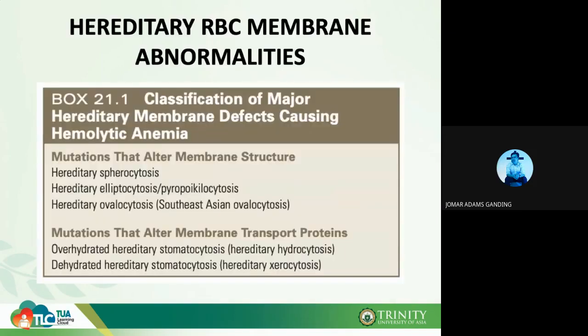Hereditary RBC membrane abnormalities can be of two types: a mutation that leads to alteration of your membrane structure, and a mutation that alters your membrane transport proteins — the proteins responsible for cation exchange moving molecules in and out of your RBC. When it comes to RBC membrane structure, there are transmembrane proteins and cytoskeletal proteins responsible for this function.